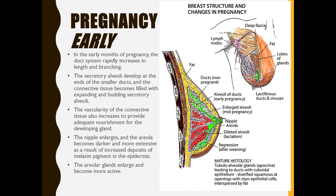In early pregnancy, the duct system rapidly increases in length and branching. Secretory alveoli develop at the ends of the small ducts, and the connective tissue becomes filled with expanding and budding secretory alveoli. The vascularity of the connective tissue increases to provide adequate nourishment to the developing gland. The nipple enlarges and the areola becomes darker and more extensive due to increased deposits of melanin pigment in the epidermis, and the areolar glands enlarge and become more active.